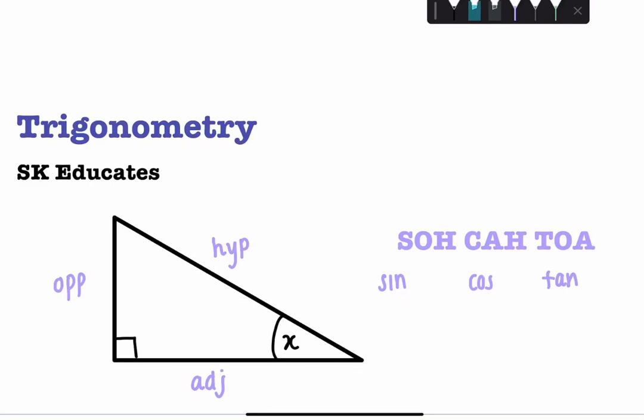Now as you can see the S is followed by an O and a H. The O refers to the opposite side and the H refers to hypotenuse. So sine is defined as O opposite divided by H, hypotenuse.